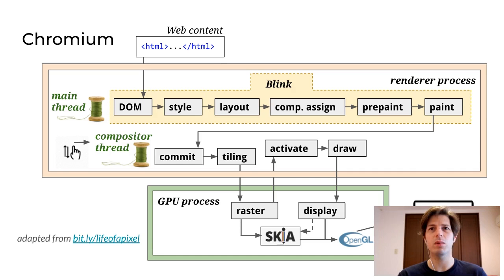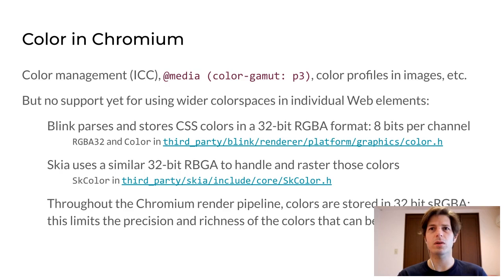The job of actually painting those pictures is carried out by a multi-platform graphics library called Skia. In Chromium, there is already some level of color management and support for media queries, embedded color profiles, images, and so on. But there isn't yet support for using richer color spaces with individual web elements. Within Blink, CSS colors are parsed and stored into a small structure — just 32 bits — that is 8 bits per RGB color channel plus alpha. These colors are eventually handed over to the Skia library to carry out the actual drawing. Skia also uses its own similar 32-bit format, which means that throughout Blink's rendering pipeline, colors are represented using only 32 bits, and this limits the precision and richness of the colors that can be used and displayed in websites.